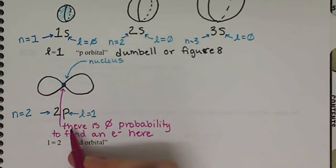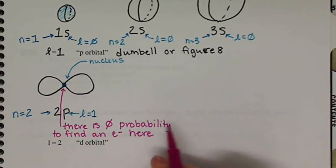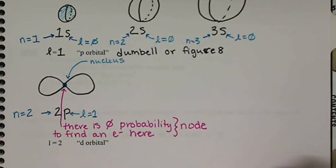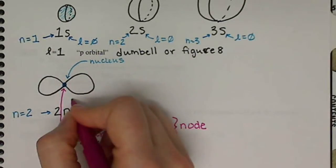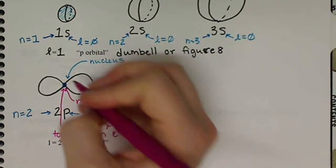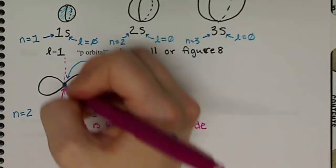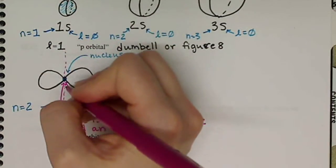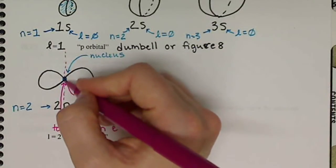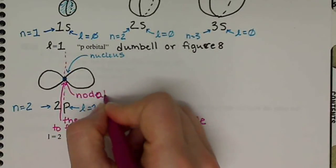When we have this specific time where there's a place where there's 0 probability to find the electron, we call this a node. So our p-orbital right there in the center has a node, and actually that 0 probability actually extends above and below in all circular, so three dimensions, so all the way in between here, and we would call this a nodal plane.